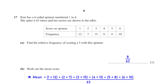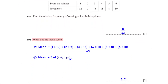Kim has a six-sided spinner numbered 1 to 6. She spins it 63 times and her scores are shown in the table. The relative frequency of scoring a 5 is equal to the frequency of scoring a 5, which is 8, divided by the total number of spins, which is 63. The mean score is (1×12 + 2×7 + 3×15 + 4×11 + 5×8 + 6×10) ÷ 63, which gives 3.41 rounded to 3 significant figures.